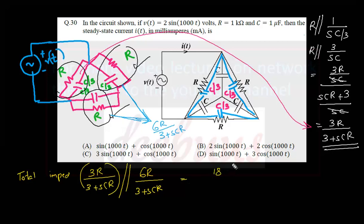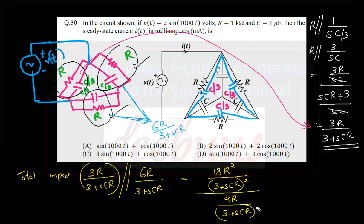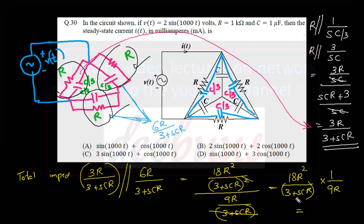Simplifying: 6 into 3 = 18R squared divided by (3+SCR) squared. We have to calculate Z = X1·X2 by X1+X2. So in the denominator side, it is 9R divided by (3+SCR). We can cancel one (3+SCR) with (3+SCR). So it is 18R squared divided by (3+SCR) into 1/9R. Simplifying, this R and this R cancel, 18/9 is 2. So Z(S) = 2R divided by 3+SCR. That is the total impedance.